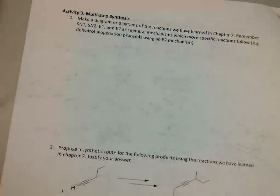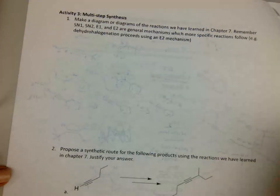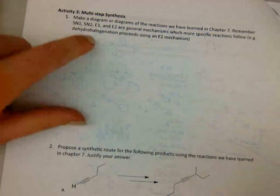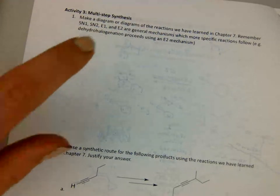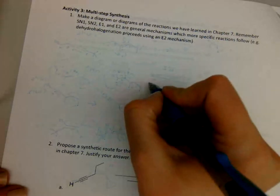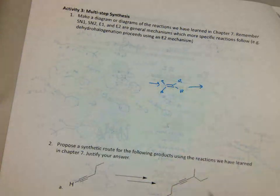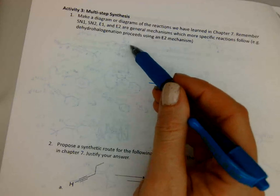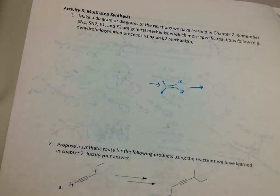This question asks you to make a diagram of the reactions learned in chapter 7. That's up to you, but there's SN2, SN1, E1, E2, and more specific reactions like dehydration, dehydrogenation, hydrogenation, and poisoned hydrogenation — basically all the ways to make alkenes and the ways to react them. You could organize it as 'ways to make an alkene' versus 'reactions of alkenes.'